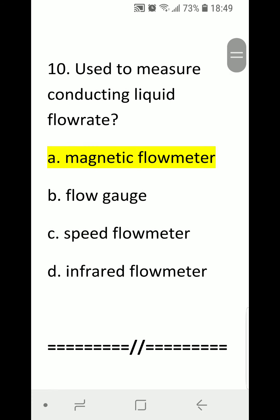Number 10: Used to measure conducting liquid flow rate. This instrument is called A. magnetic flow meter, B. flow gauge, C. speed flow meter, or D. infrared flow meter. Correct answer is A. magnetic flow meter.